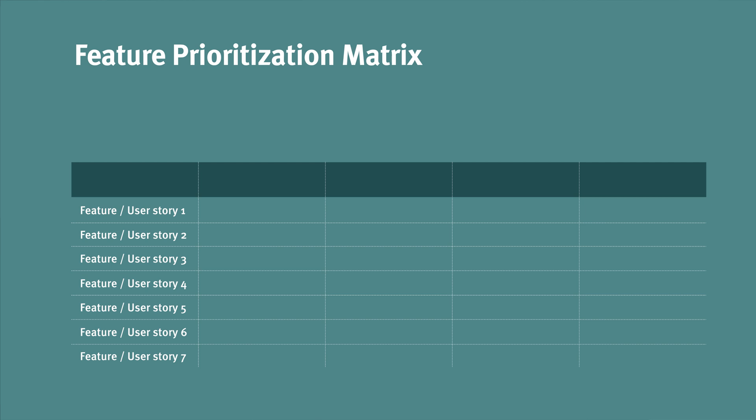To do this, start with a spreadsheet inputting all the features and user stories down that left-hand column. Next, you'll put the names of your personas across the top row.